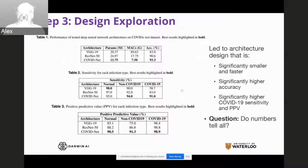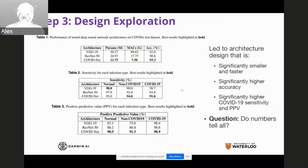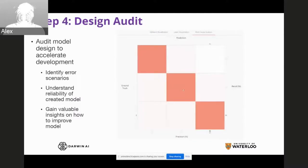This leads to architecture designs that are significantly smaller and faster, with significantly higher accuracy and significantly higher COVID-19 sensitivity and positive predictive value. But do numbers really tell all? Rather than stopping there, we take it one step further to make sure the model is trustworthy and dependable, making the right decisions for the right reasons. That brings us to the fourth step: design auditing — ensuring everything is trustworthy and working well, then auditing the model design to accelerate development.